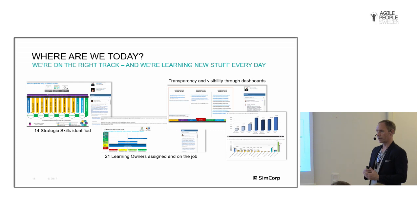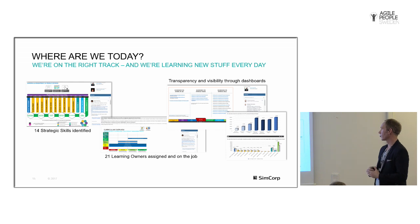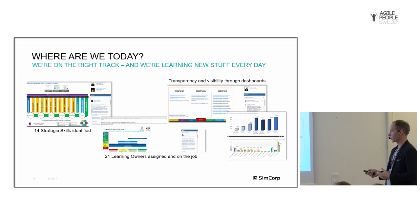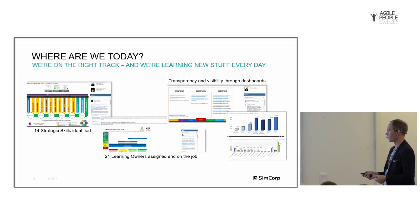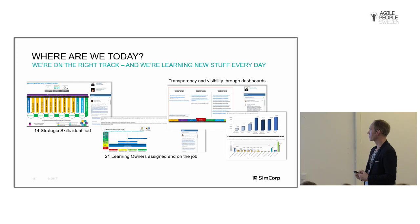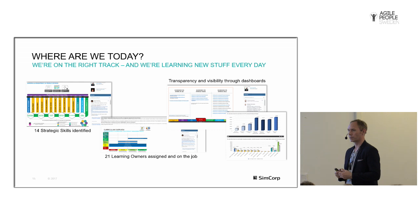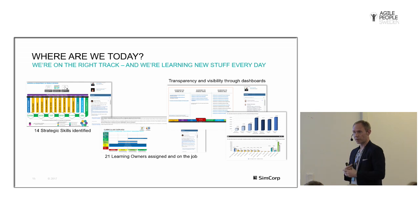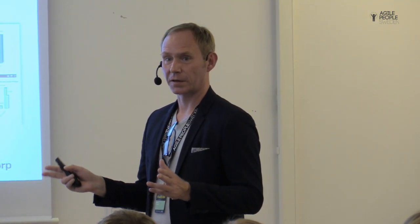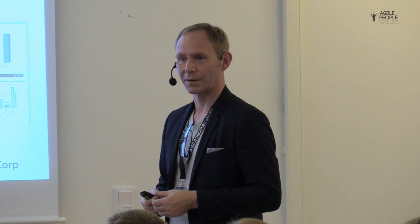We've been doing this for around a year, and I think we are on the right track. We're currently working with 14 strategic skills that have been identified, we have 21 learning owners assigned and on the job, and we have complete transparency and visibility through a number of dashboards where everyone can go in and see everything that's going on. In 20 minutes or less — that was the quick introduction to how we are doing this at SimCorp. Happy to take questions offline.